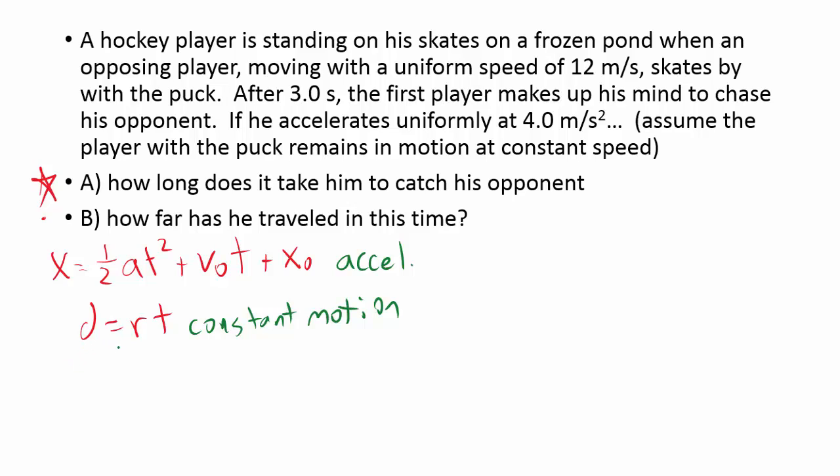So the first thing we want to start with is we're trying to find out how long it takes us to catch our opponent for this person who waits. So I'm going to start with the person who's trying to catch their opponent first. A few things to note here: we know that their acceleration is 4.0 meters per second squared. We know that their initial velocity, or v sub zero, is equal to nothing. They started out stopping.